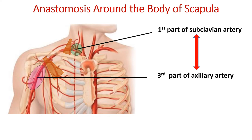As the subclavian artery crosses the outer border of the first rib, the same artery is called the axillary artery, which is also divided into three parts by the pectoralis minor muscle. The first part of the axillary artery is proximal to pectoralis minor, the second part is deep to it, and the third part is distal to it. The anastomosis around the scapula, located posteriorly, takes place between branches of the first part of the subclavian artery and the third part of the axillary artery.